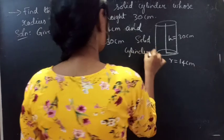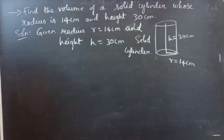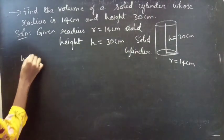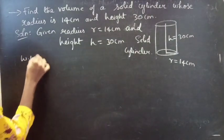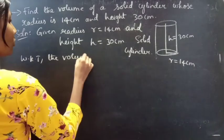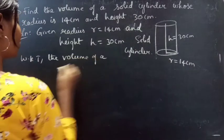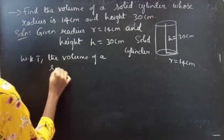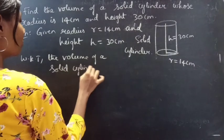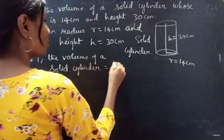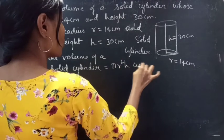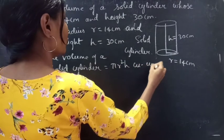So here we are asked to find the volume of the solid cylinder. We know that the volume of a solid cylinder is given by the formula π r² h cubic units.